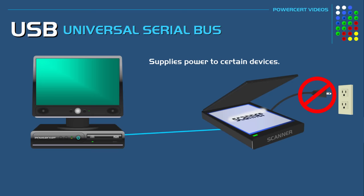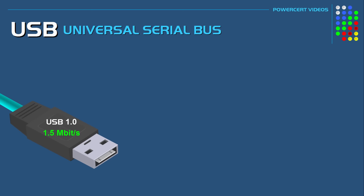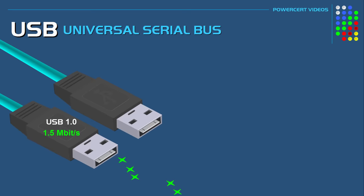The first USB version was released in 1996, starting with USB 1.0, with later versions released throughout the years. USB 1.0 had a transfer speed of 1.5 megabits per second. Then two years later in 1998, USB 1.1 was released, and this had a transfer speed of 12 megabits per second.